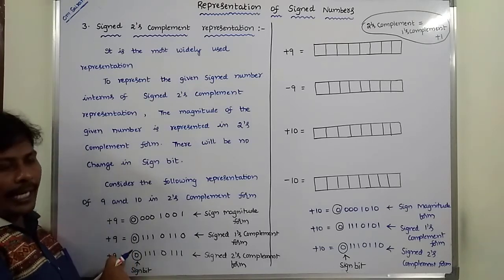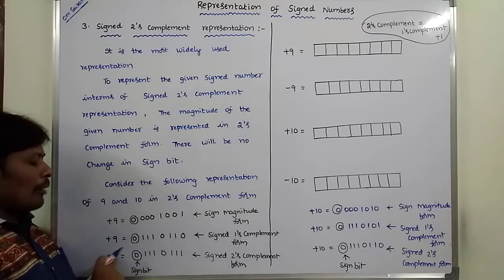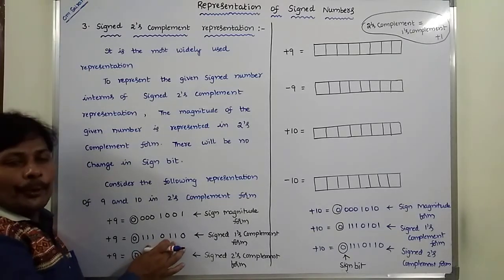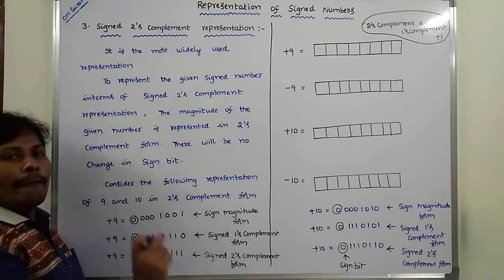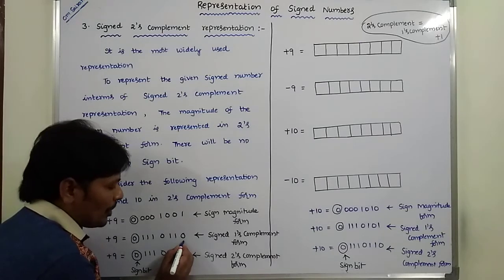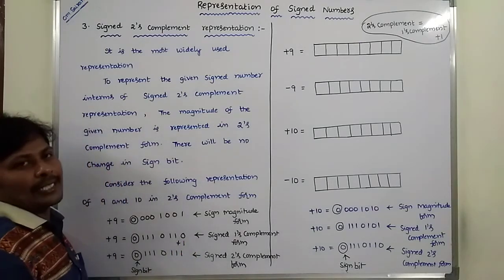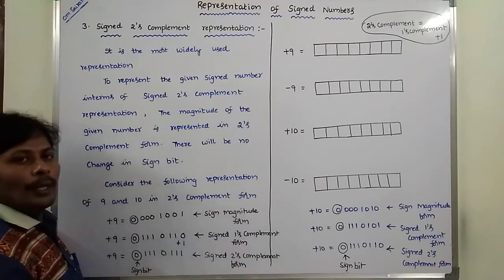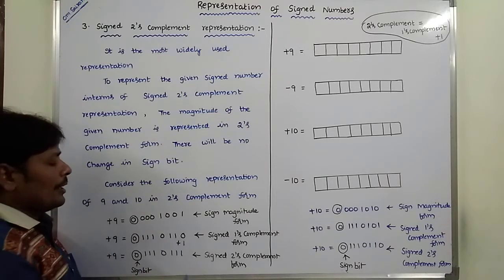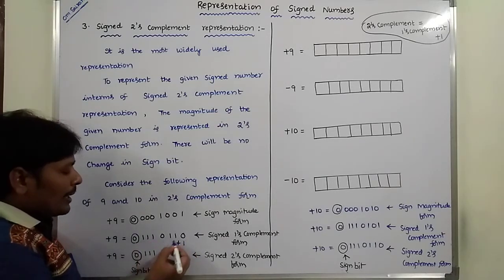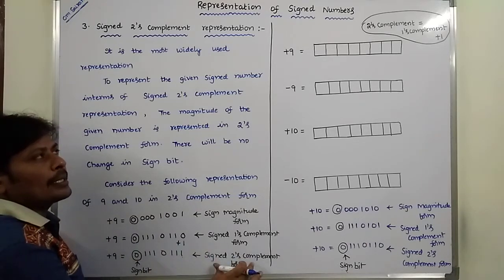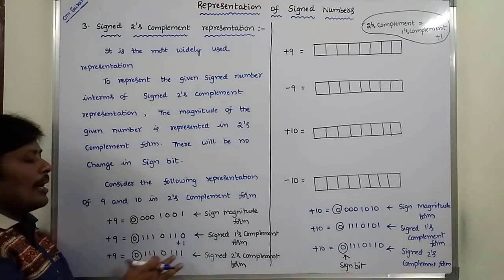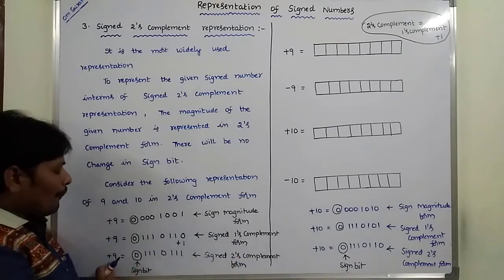There will be no change in the sign bit. Since plus 9 is positive, we put 0 at the MSB position as the sign bit. For the remaining magnitude, we add 1 at the LSB position. Signed two's complement form equals signed one's complement form plus 1. This 1 is added at the LSB position. So 0 plus 1 equals 1, and the remaining bits remain the same. This is the signed two's complement representation of plus 9.